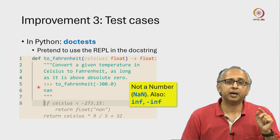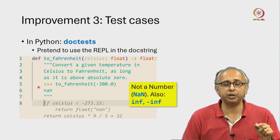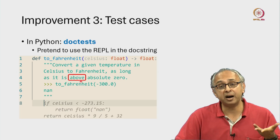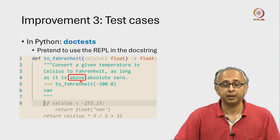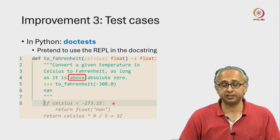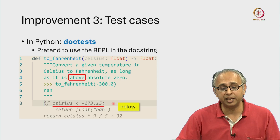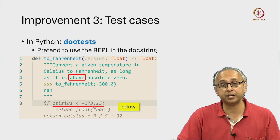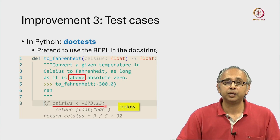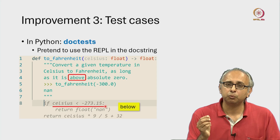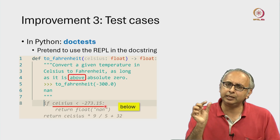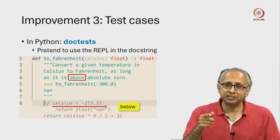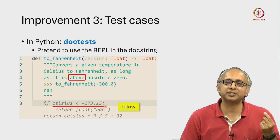By the way, you may have observed that in the docstring we have said what we want our function to do if the value given is above absolute zero. In the code that our AI is suggesting, it tells us what to do if the value is below absolute zero — strictly less than minus 273.15. So this might suggest to you: well, what if the value is exactly equal to absolute zero? What is the intention then? Let's add one more doctest to make this intention very clear.